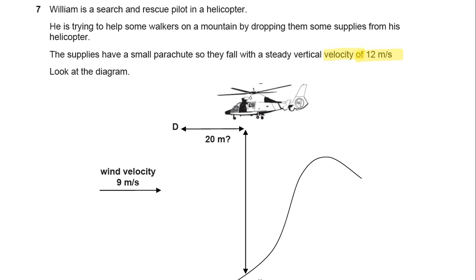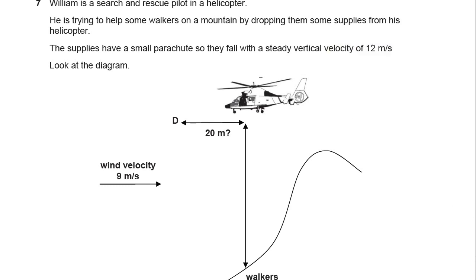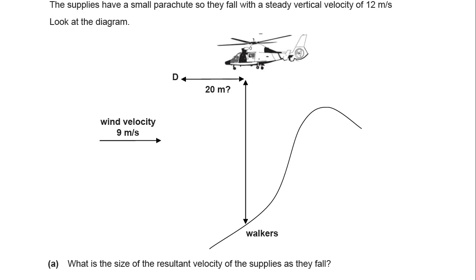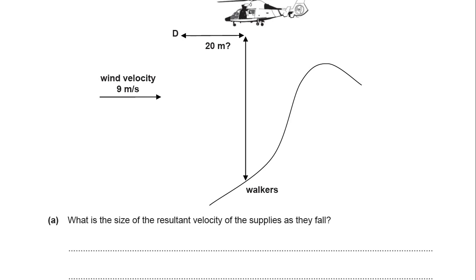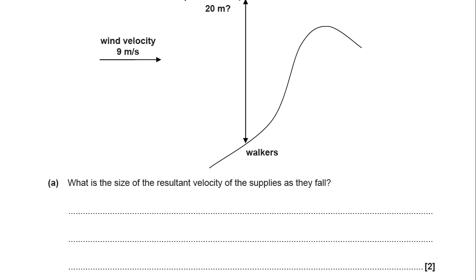Look at the diagram. Here's the helicopter, the walkers, and two other vectors. The distance here we don't know — we don't really need to worry about that at first. See the question mark? Just ignore that for now. The wind velocity is 9 metres per second in this direction — it's a vector. So, what is the size of the resultant velocity of the supplies as they fall? You need to combine those two vectors to create the resultant vector.